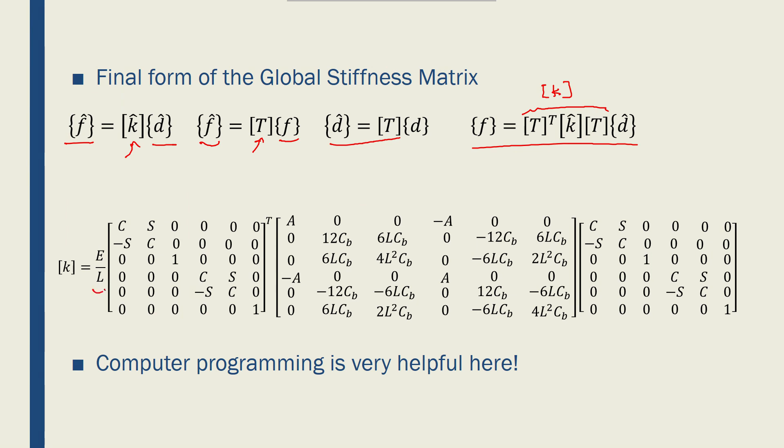To expand, we'll have E over L times the transpose of the transformation matrix. So this is T transpose. Then this is the local stiffness matrix, and this is the transformation matrix as is. And if we multiply this 6 by 6 to this 6 by 6, to this 6 by 6 matrix, we'll have a 6 by 6 global stiffness matrix.